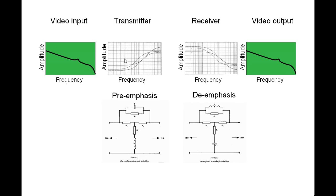And then it looks like this. You have video input, you have this in the transmitter, we call it pre-emphasis. We have this in the receiver, we call it de-emphasis. And the frequency response is the same as what we put in it.